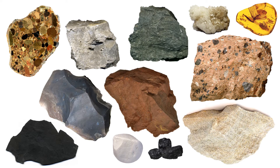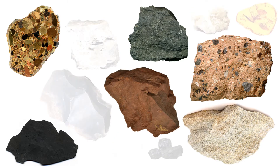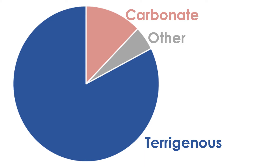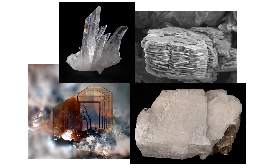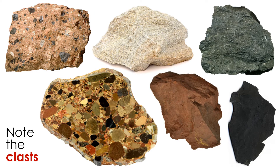Of all the various types of sedimentary rocks in the world, terrigenous rocks are by far the most abundant and common. They account for the vast majority — perhaps 80 to 85 percent — of all sedimentary rocks in the world by volume. These rocks are also known as siliciclastic rocks. They consist almost entirely of silica in the form of silicate minerals like quartz, feldspar, mica, and clay. These minerals occur in particles or clasts derived from weathering and erosion of pre-existing rocks.